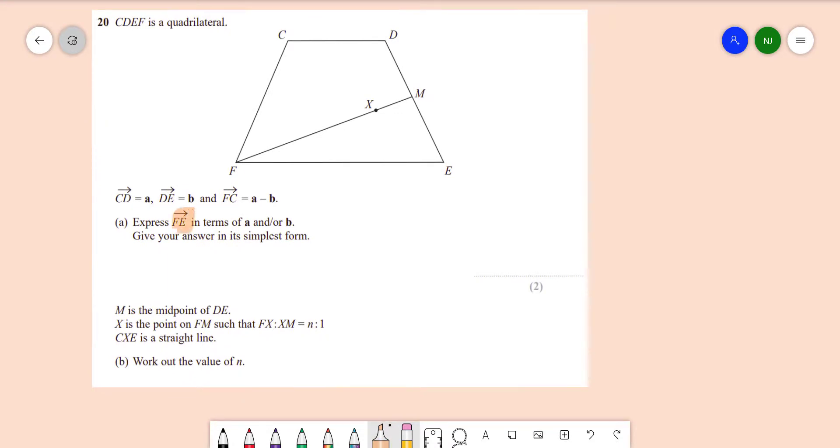So let's see part A. We're trying to express FE in terms of A or B, so we're trying to find FE. Now to do that we're going to go FC, CD, D to E. We're going to use this journey because we know all these pieces. FC is A minus B, CD is just A and DE is just B. So to do F to E we can actually just go FC, CD and then DE and then when we collect like terms we have two A's and minus B plus B cancels out so it's just 2A. So FE is actually just 2A.